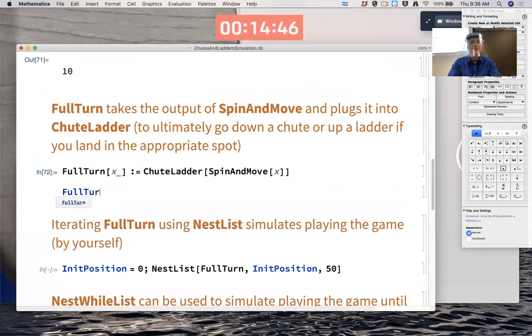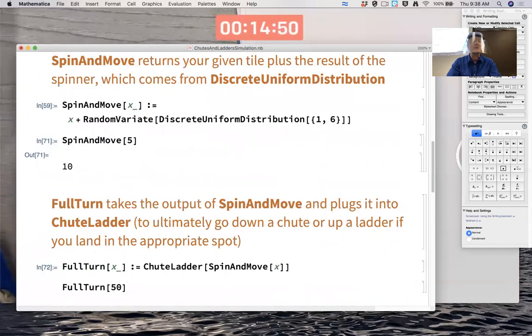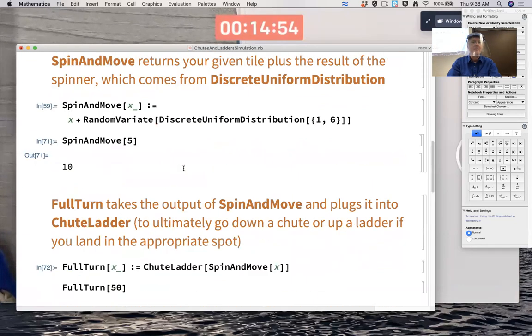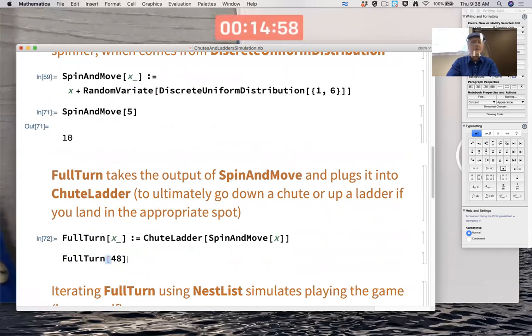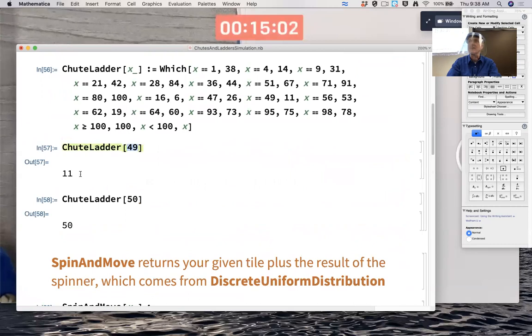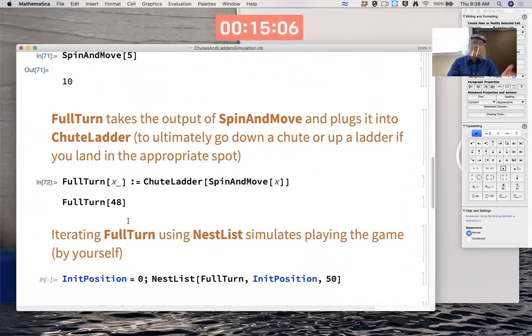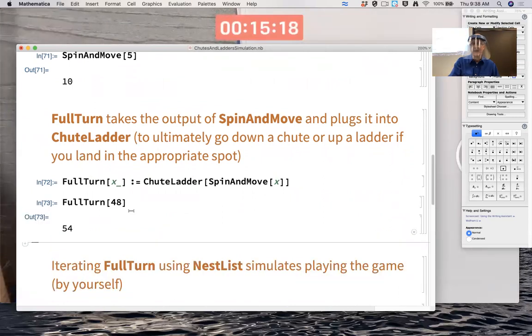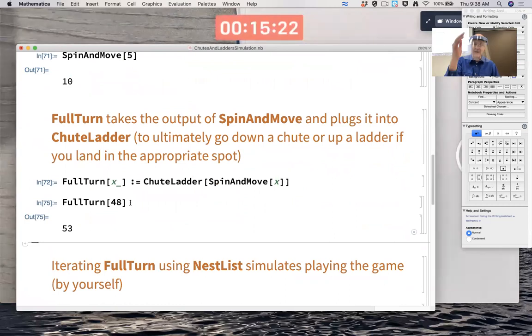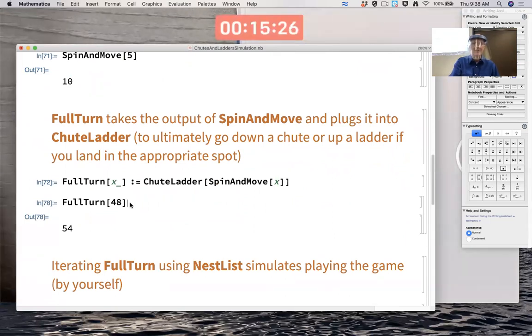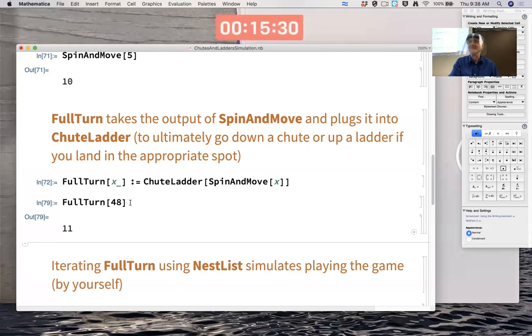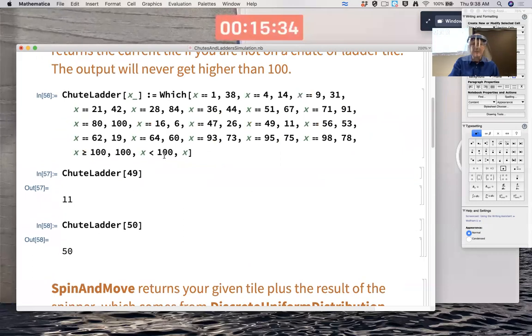So for example, if I apply FullTurn to 48, why do I pick 48 here? Because I know that at 49, there was a chute going down to 11. The output could be 50, 51. It could not be 49. Because if SpinAndMove brings me to 49, then ChuteLadder brings me down to 11. There's no way I'm going to get 49 here. I might get an 11. I got a 67. There must have been a ladder that went up as well. There's an 11. One of the outputs was 67. That must have been some ladder. Yeah. If you get a 51, you go up to 67.